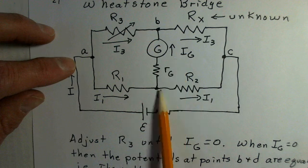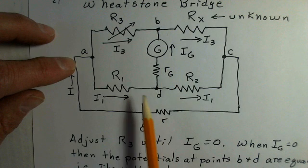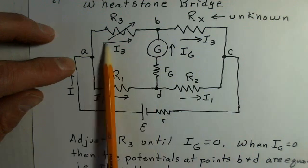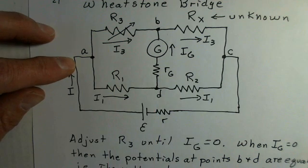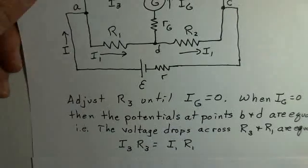Consequently, we have the same potential drop. So I3 times R3 is equal to I1 times R1. The potential drops are the same.